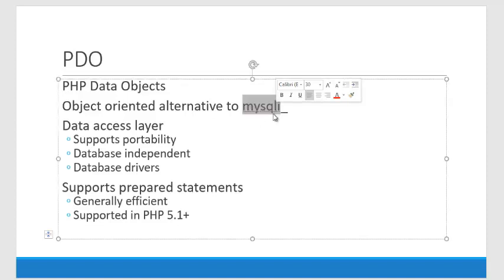MySQLi is that thing you're familiar with — everything is a function call there, it's MySQLi underscore name of the function. Here, we're going to be using PDO objects, and we're going to be using functions, but since those functions are members of an object, we call them methods. Some of the general upside to this — there's already a YouTube video saying why this is good — is the data access layer, which means that what you do is going to be portable.